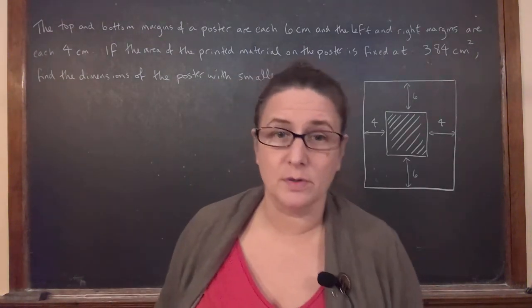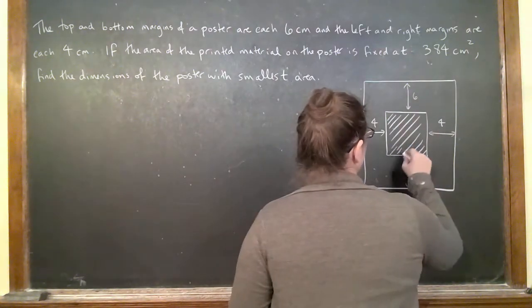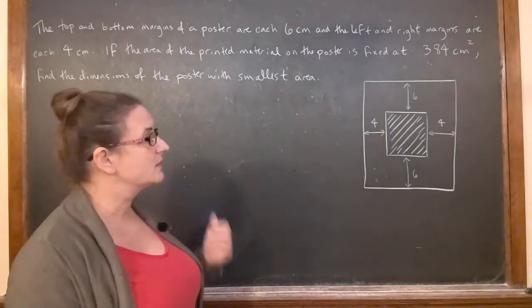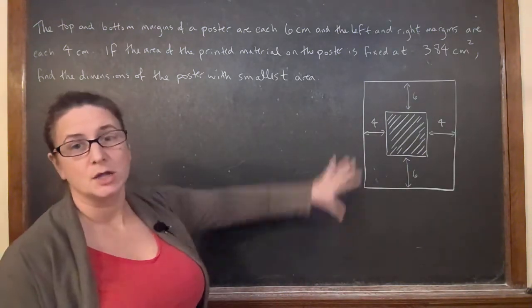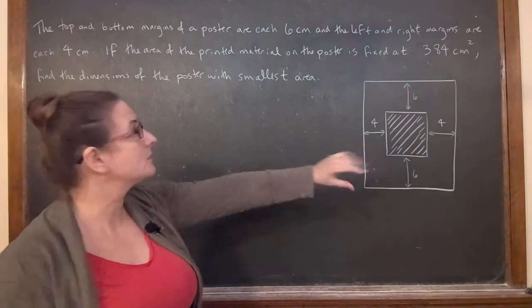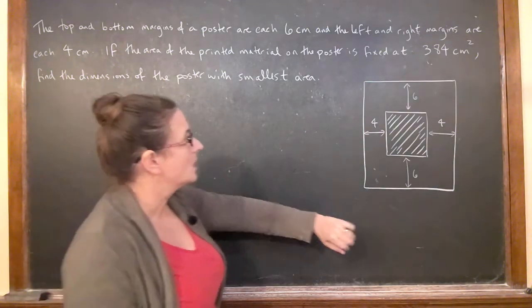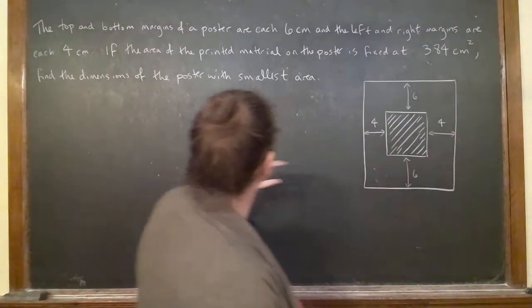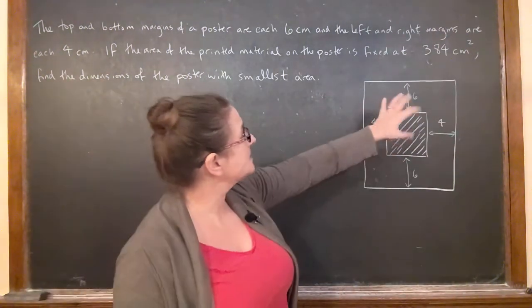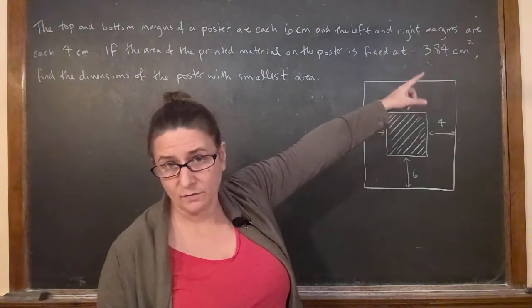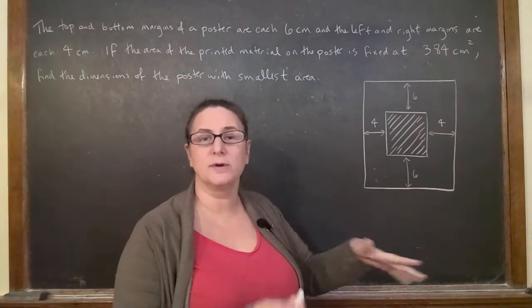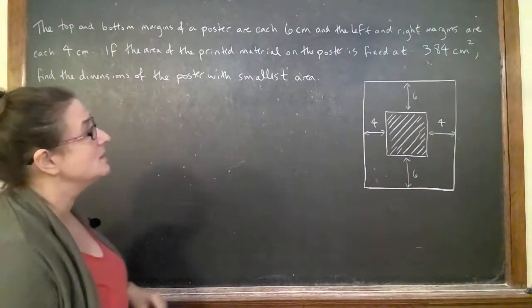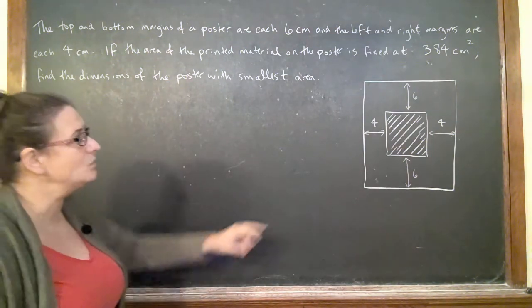In this problem we're supposed to compute the smallest dimensions for the area of a poster. It's a rectangular poster. They gave the picture, so you can look at the picture and get an idea of what they're asking. The top and bottom margins of the poster are each 6 centimeters, and the left and right margins are 4 centimeters. The printed material in the middle has to have a total area of 384 square centimeters. The question becomes: what are the dimensions, the outside dimensions, the total dimensions of the poster with smallest area?